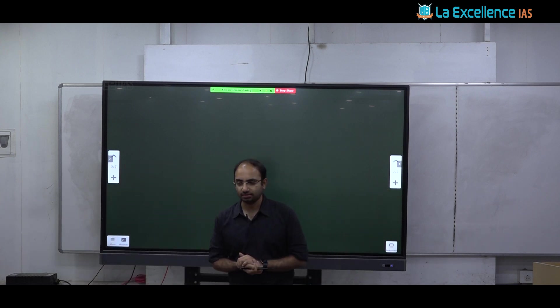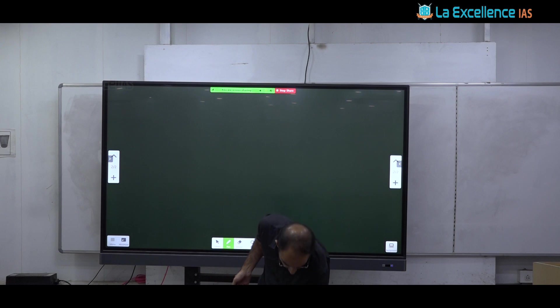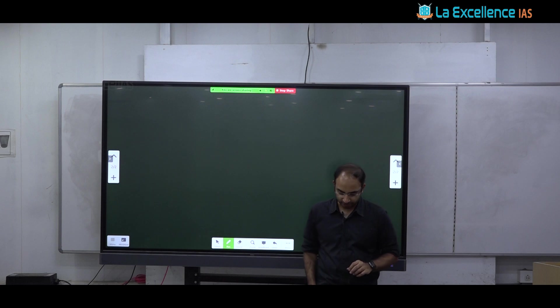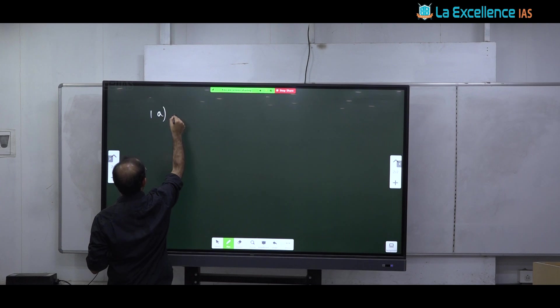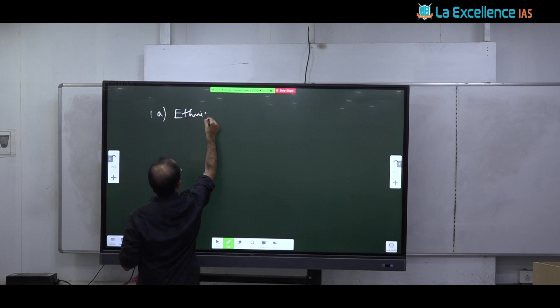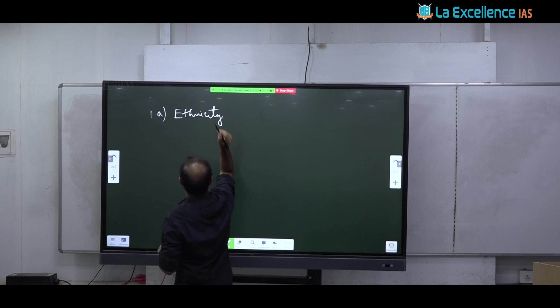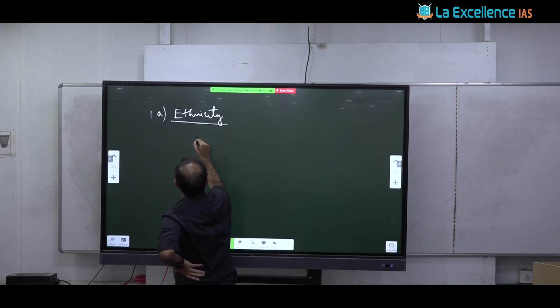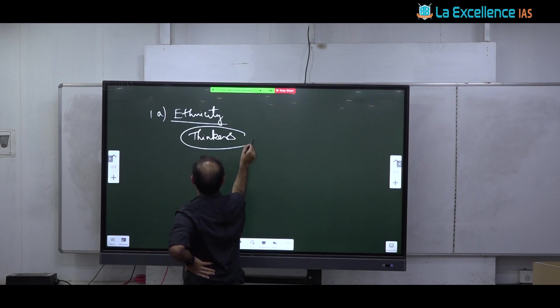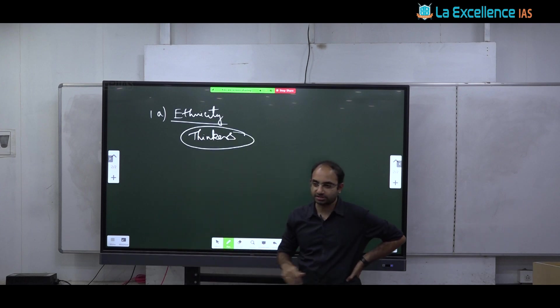So did not find much to discuss in terms of issues. But I will quickly tell you where we have faced, where examples or some data can be used. That will be our focus. So the first question, we will first begin with 1A that is ethnicity. So again, here the idea is not that you will write ethnicity from thinkers point of view.